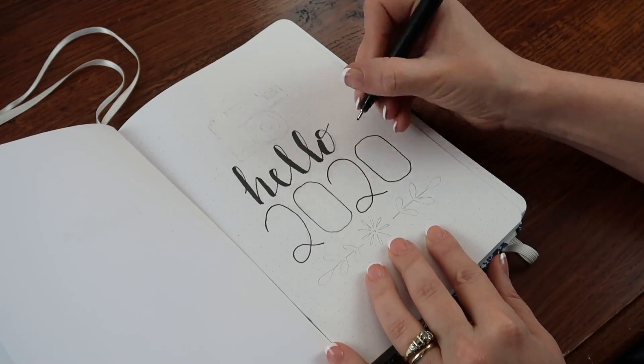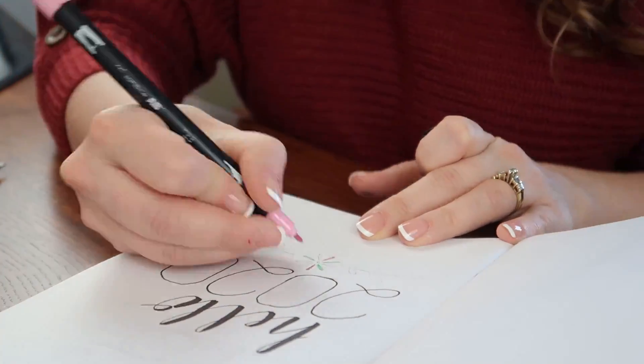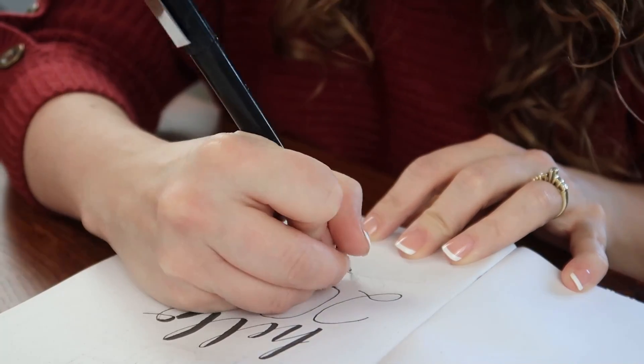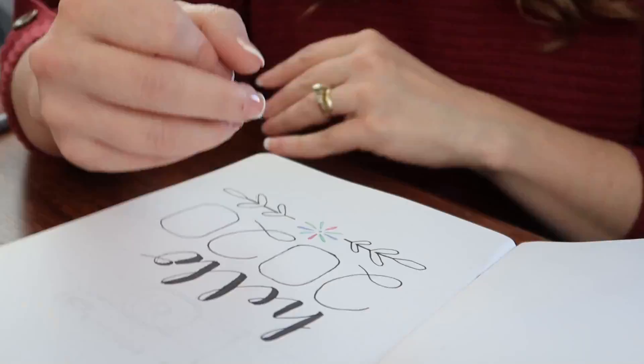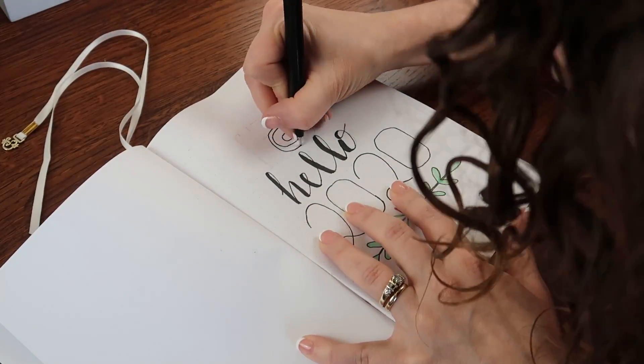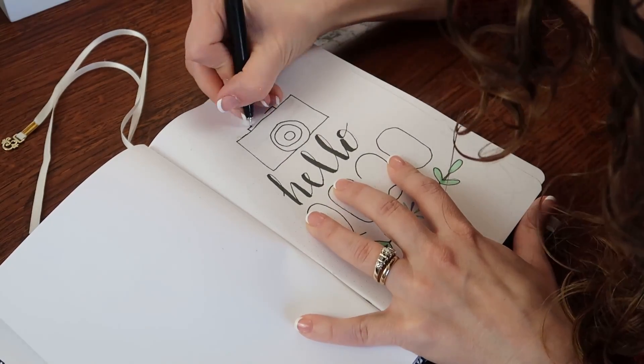Later on when I do my flip through of my bullet journal when you see all of the pages you will notice that on the left side my son Bryson who is six decided he was going to draw on it. He wanted to draw a camera as well. So basically on the first page there's his drawing and honestly I love it.